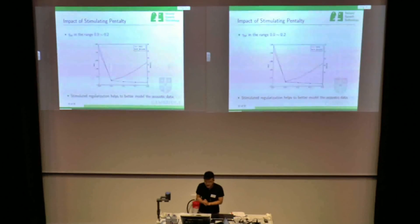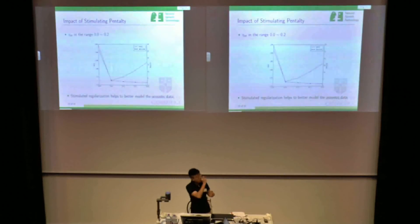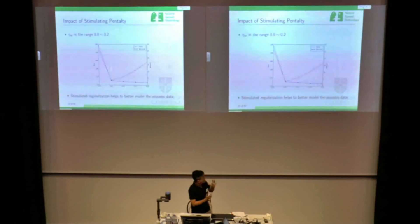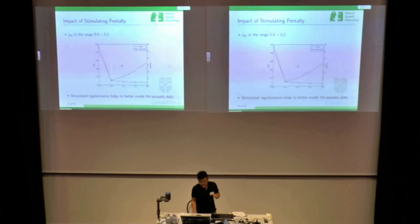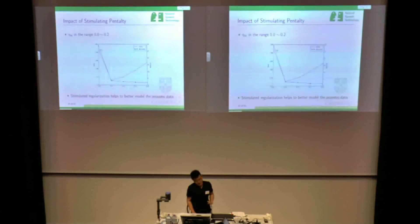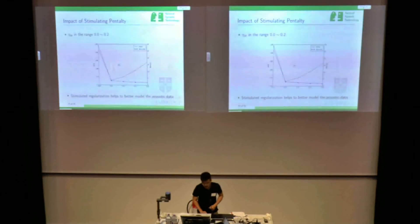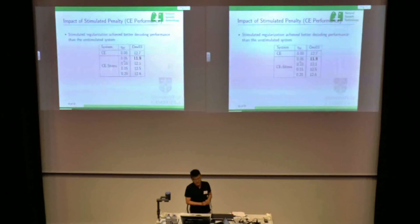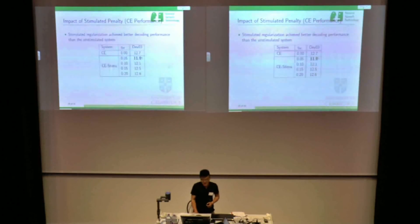Here is an investigation of the impact of different stimulating penalties, lambda-ST. With a higher penalty, the stimulated KL divergence decreases. Besides, this regularization also helps to better model the acoustic data. At lambda equals 0.05, the cross entropy achieves the best final value compared with the other systems. On the decoding performance, we observe consistent gains, and the system penalized at 0.05 gives the best performance, decreasing the word error rate from 12.7 to 11.9.